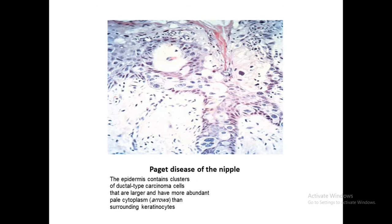This is Paget disease of the nipple. Paget disease is an expression of an underlying carcinoma of the breast, and it will definitely be of in situ ductal carcinoma type with or without invasion. Here we have the Paget cells, which are large cells in the nipple containing large irregular hyperchromatic nuclei with clear cytoplasm. These are Paget cells. This is Paget disease of the nipple.